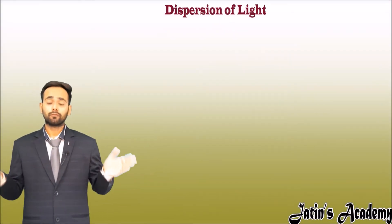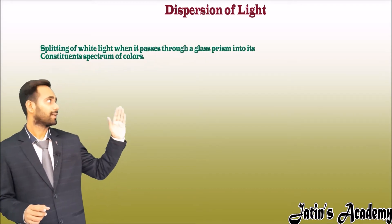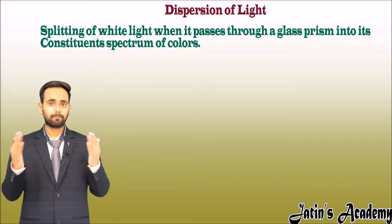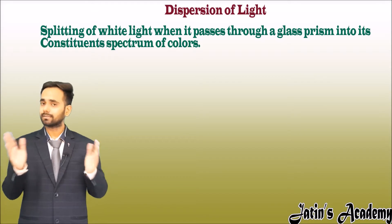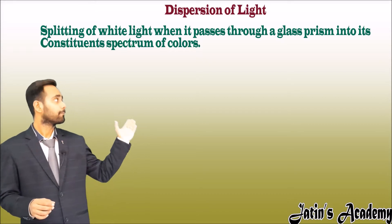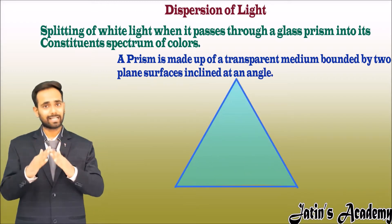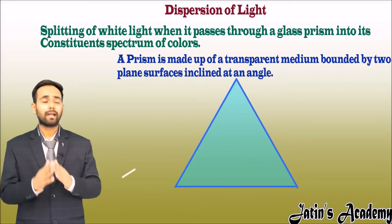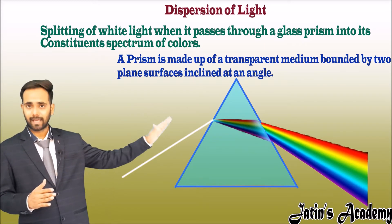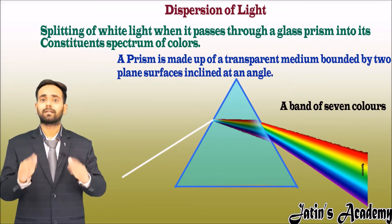Dispersion of light: when white light passes through a prism, it splits into its constituent colors. A prism is a rectangular glass slab in which two surfaces are inclined to each other. When white light passes through this glass prism, we get a band of seven colors, and this band of seven colors is nothing but the spectrum of light.